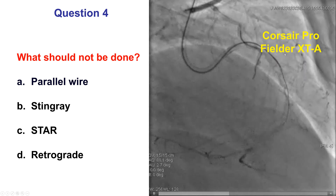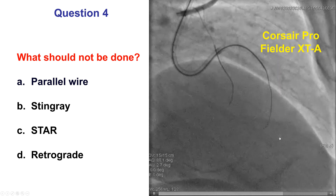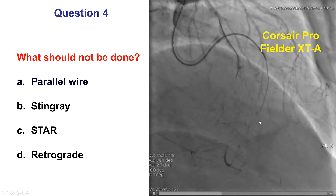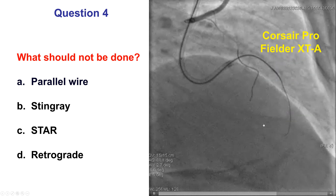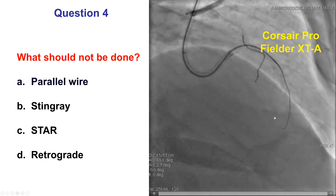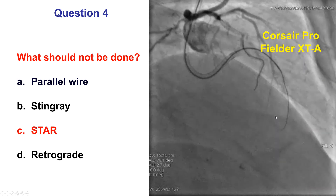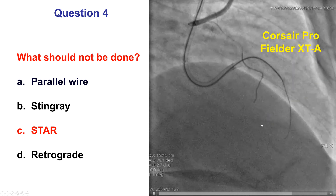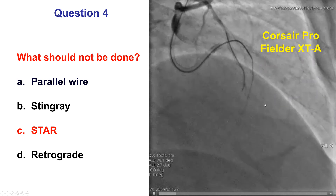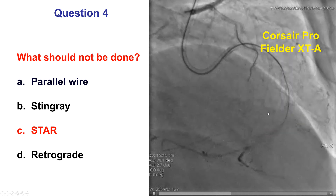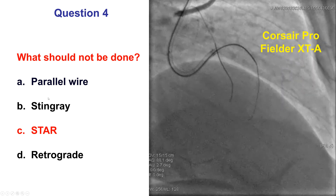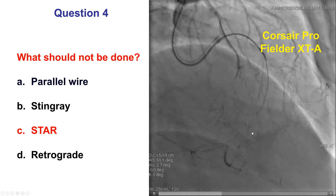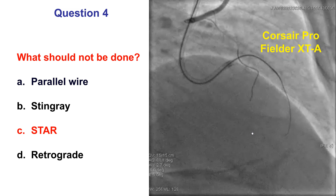We tried with a Corsair and a Fielder XTA, which seemed to advance along the course of the vessel but would not advance any further. On dual injection, it looks like we're still within the body of the CTO. What should not be done in this case is STAR — subintimal tracking and re-entry. The ideal thing would be to either cross with a wire, or if re-entry is needed, do a targeted re-entry with the stingray system or use the parallel wiring technique, rather than enlarging the dissection plane using the STAR technique.